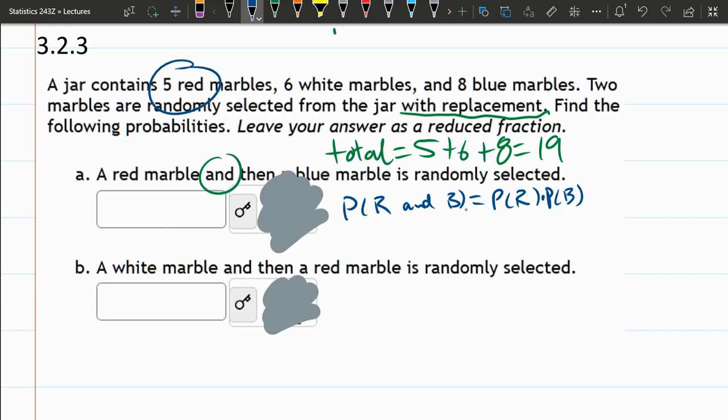Probability of red - it's favorable divided by total. Probability of red: we have five reds, nine total. Probability of blue: we have eight blues.